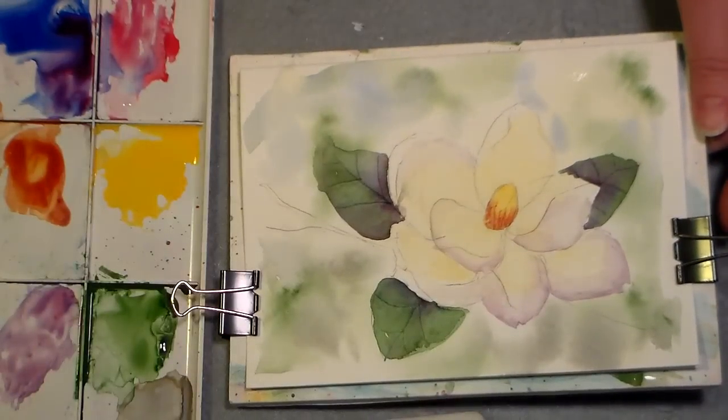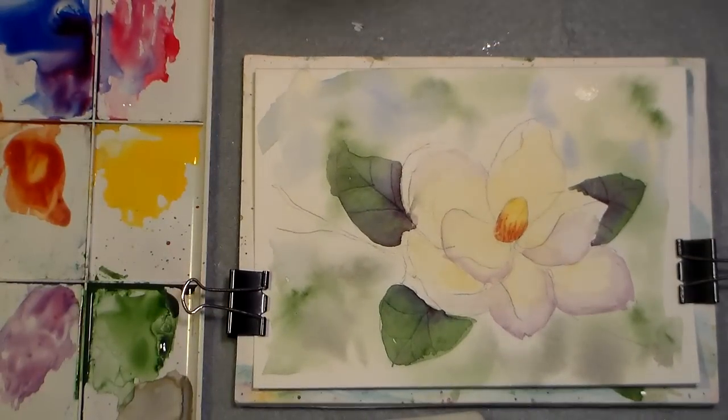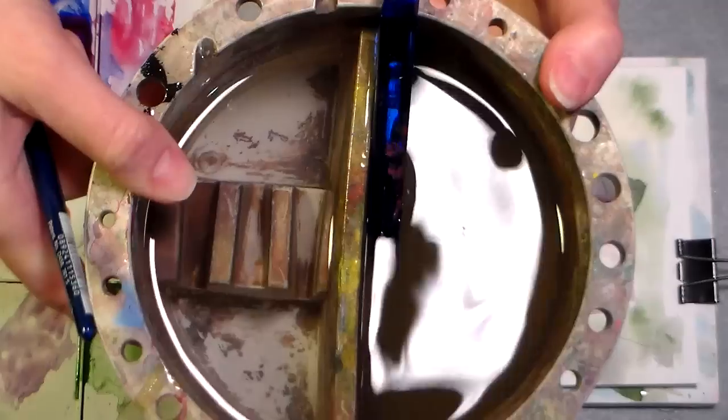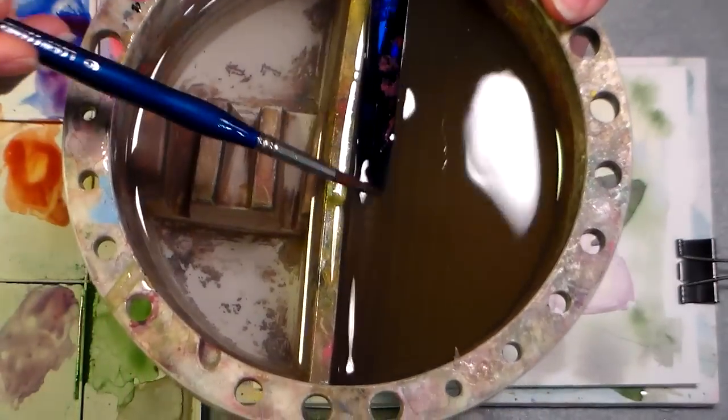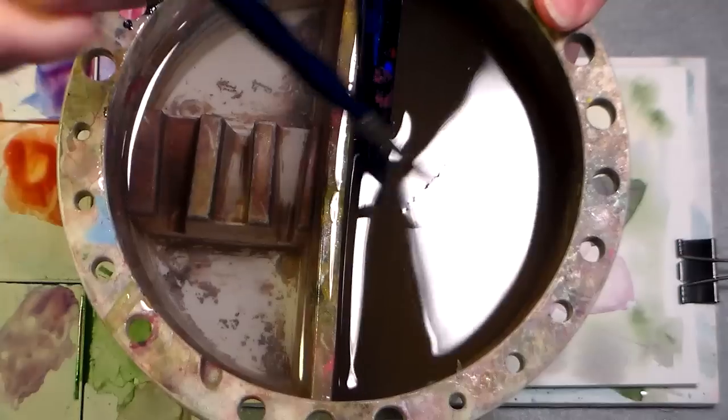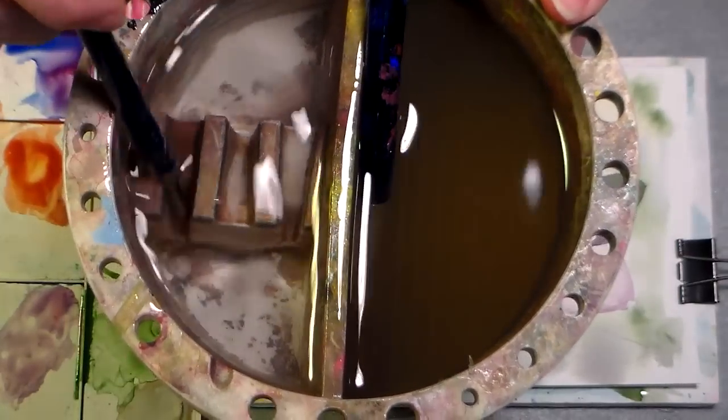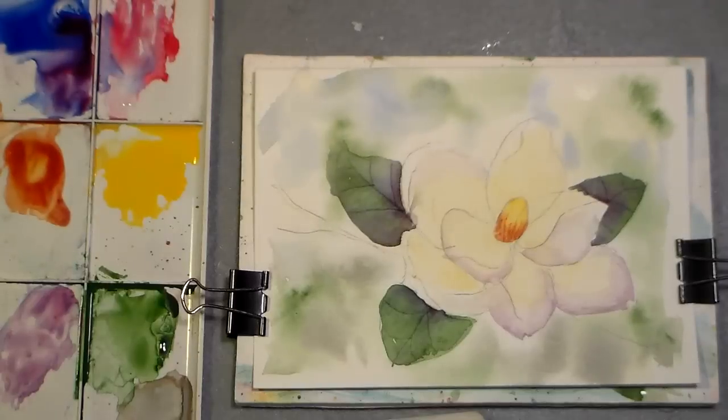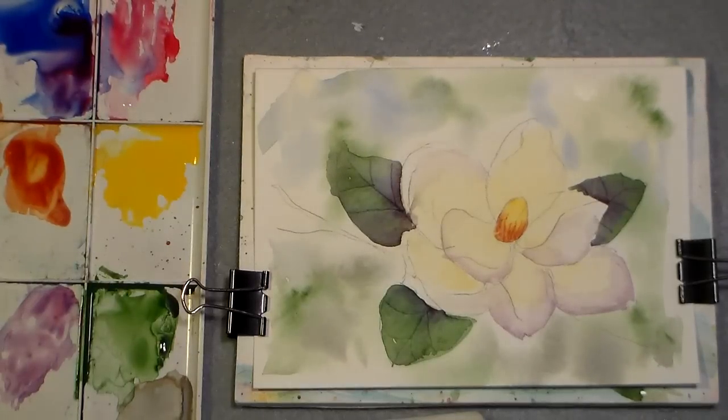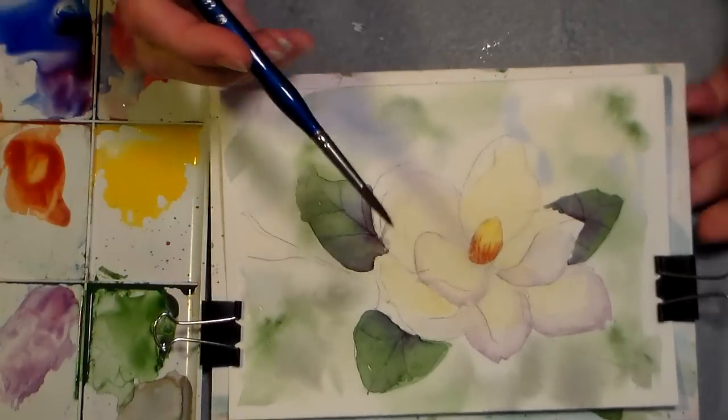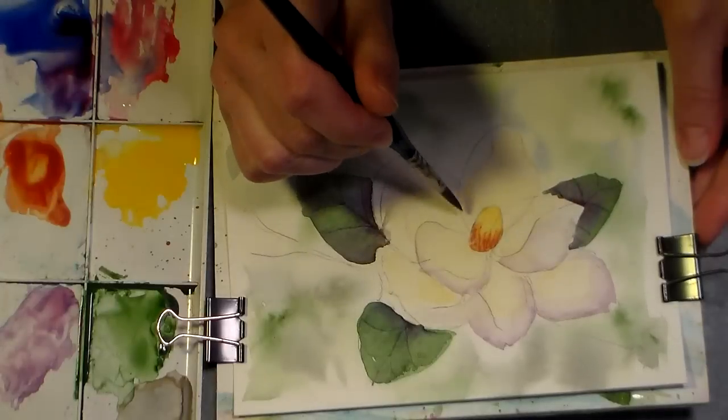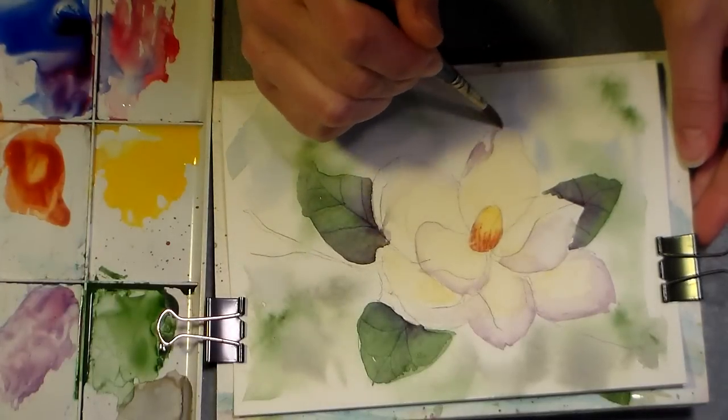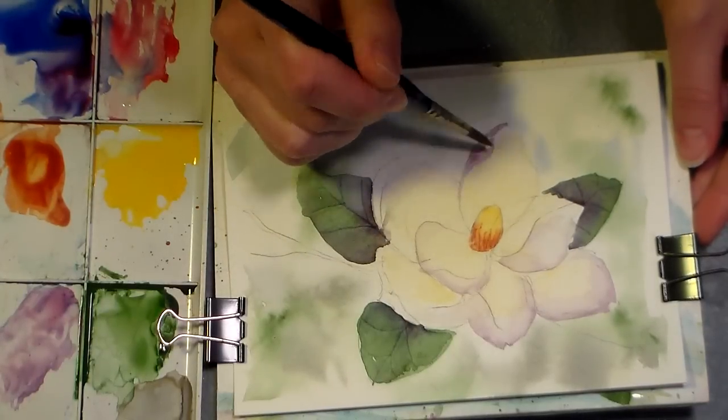All right, so back to the purple that we mixed. We're gonna use that, by the way, I'm gonna show you my water bucket here. Look how one side's really yucky and one side's really clean. I always have two buckets of water or a divided bucket like this. I use one side to wash my brushes and the other side to pick up fresh water for my using on my paint to mix and stuff like that. So that's a little tip for you. That was one of the first tips I learned and I sometimes forget to share that because it's so second nature, but you really want to do that. It'll make a big difference in your painting.